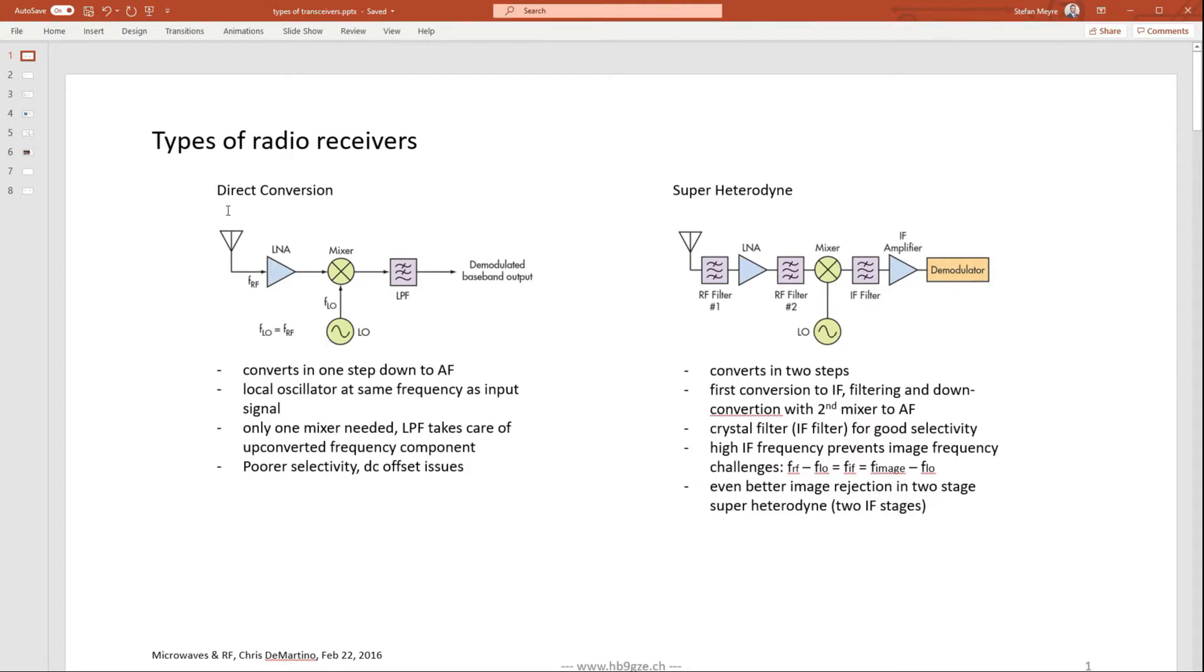I guess it all started with this direct conversion receiver here that you see on the left side. It is a very simple approach. The simplest way probably to come up with a receiver is that you take the input signal from the antenna and you mix it together with exactly the same signal. If you have a 3.5 megahertz signal, you mix it with a 3.5 megahertz sinusoidal signal. And what you get is all the audio information at the output, and you just have to filter away potential high frequencies in the output signal. So you directly convert a high frequency into audio band low frequency signal.